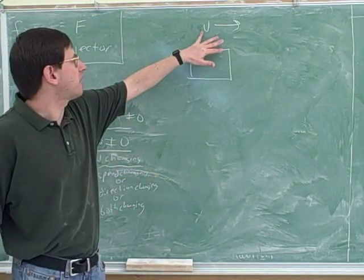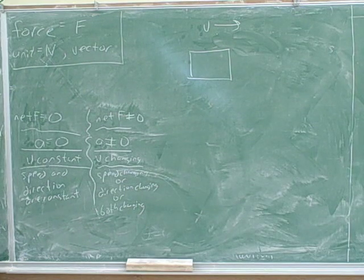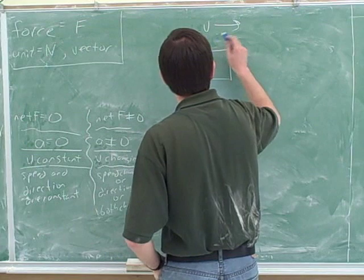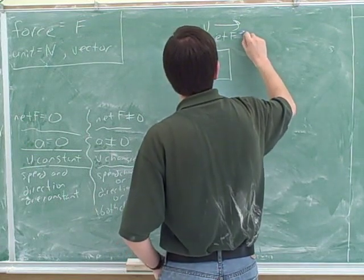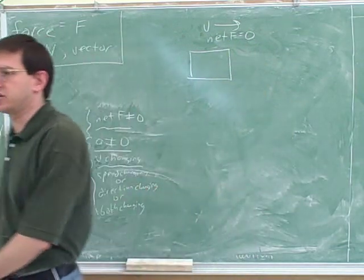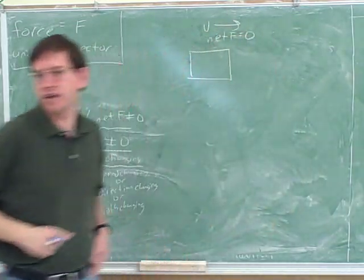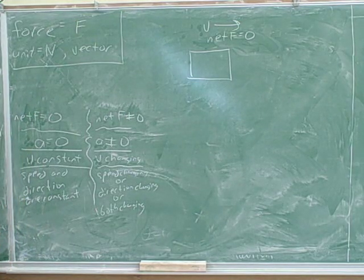So let's say we have this velocity here. We don't know anything about the forcing on this object. Now let's say that I tell you that the net force on this object is zero. In fact, let's say I tell you that there are no forces on the object, so the net force is zero.